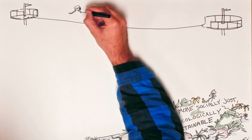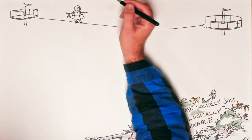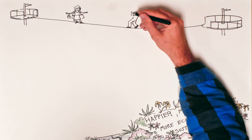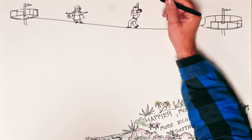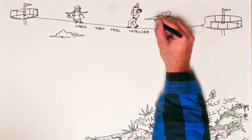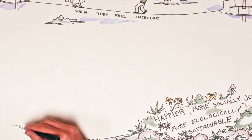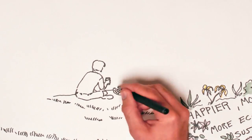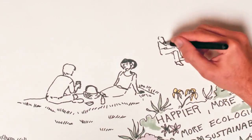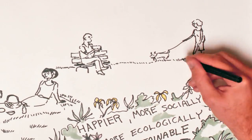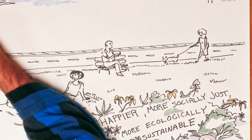First, we need to understand what causes people to prioritize materialistic values. For instance, studies show that people focus more on material things when they feel insecure. So instead of buying a new handbag or power tool the next time you've had a blow to your self-esteem, consider a different coping strategy, like spending time with friends or taking a walk outside.